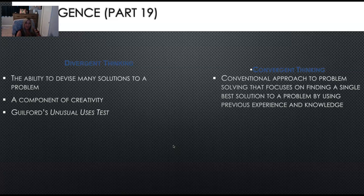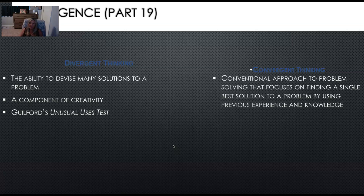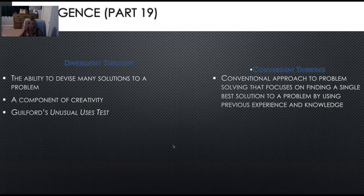It's good to know divergent and convergent thinking. Divergent thinking is the ability to devise many solutions to a problem — it's also a component of creativity. Convergent thinking is the conventional approach to problem solving that focuses on finding a single best solution by using previous experience and knowledge — it looks at what worked before in the past versus divergent thinking, which is when you're looking outside of the box.